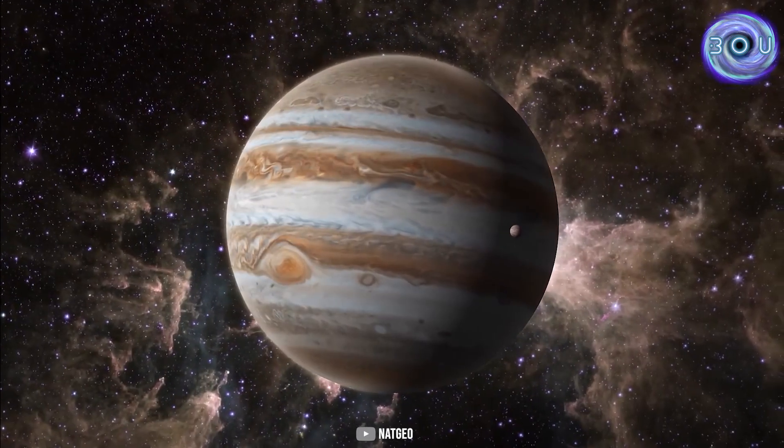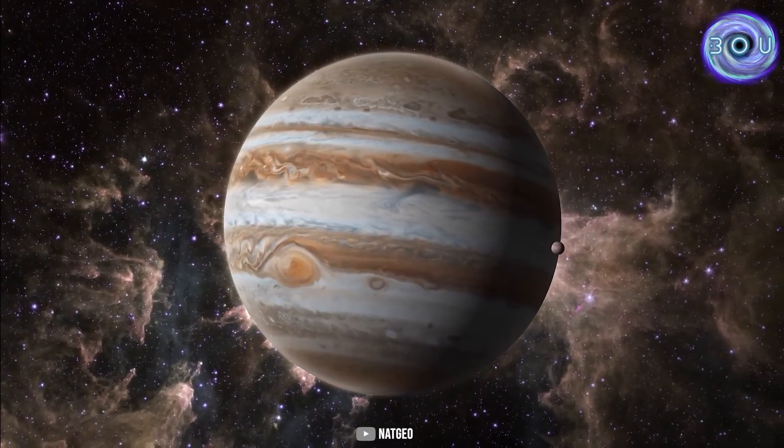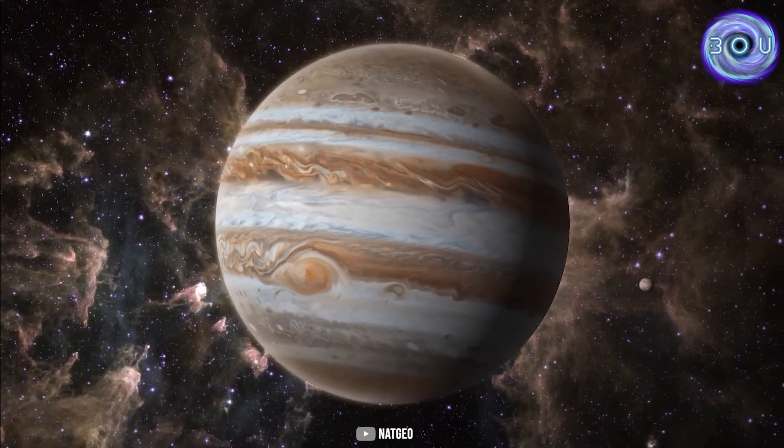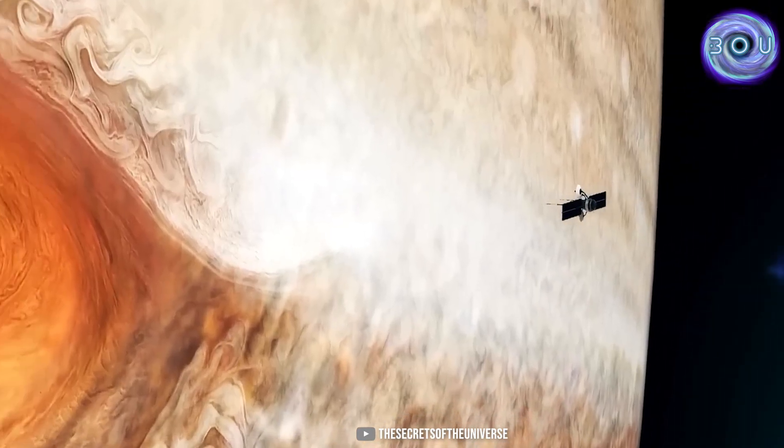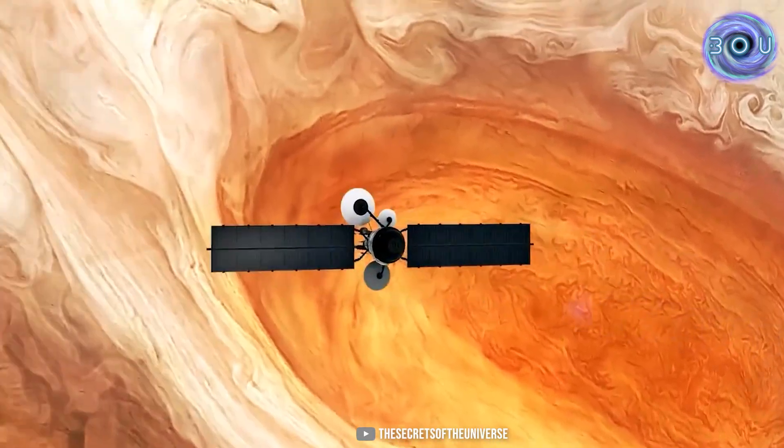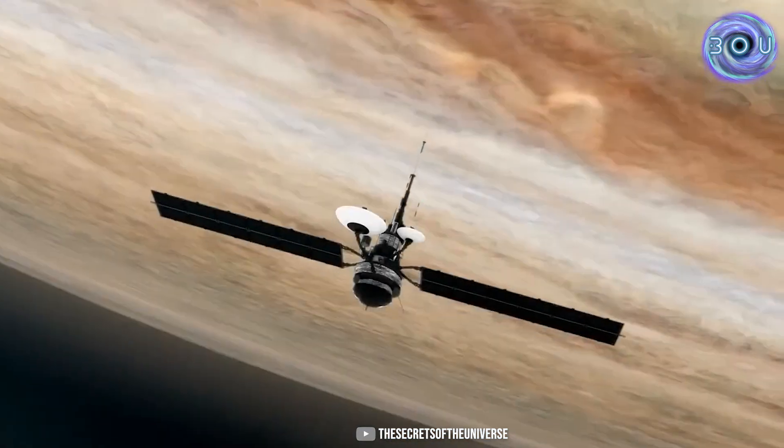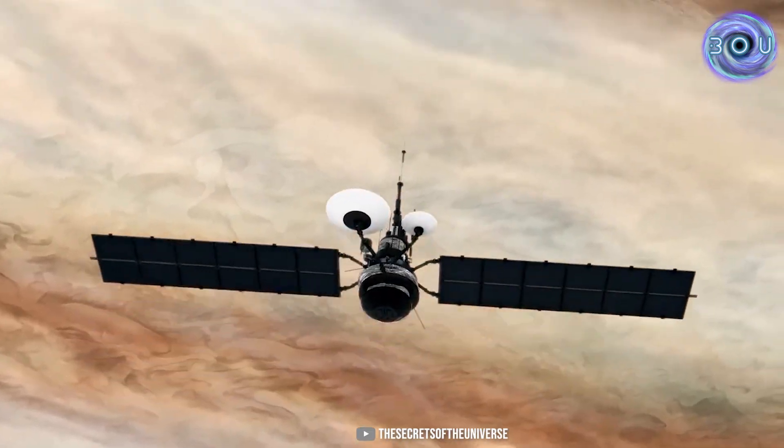The magnetic field of this giant planet is so large that it extends all the way to the orbit of Saturn. NASA has sent a spacecraft named Juno to orbit this planet in order to thoroughly observe its magnetic field and provide scientists with more information about the dynamo effect.